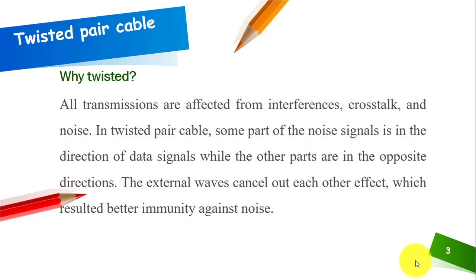In twisted pair cable, some part of the noise signals is in the same direction as the data signal, whereas other parts are in the opposite direction. These external waves can cancel each other's effect, which results in better immunity towards noise. In simple terms, the cables are twisted because noise is also in the form of signals, and the opposing directions allow cancellation.